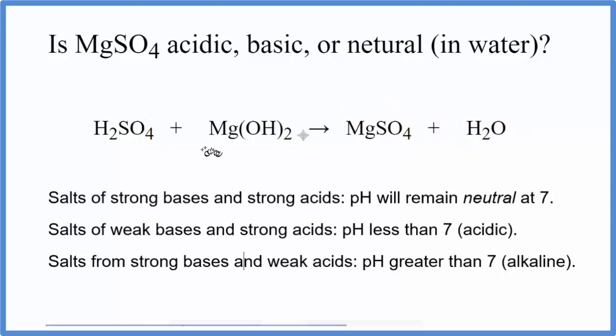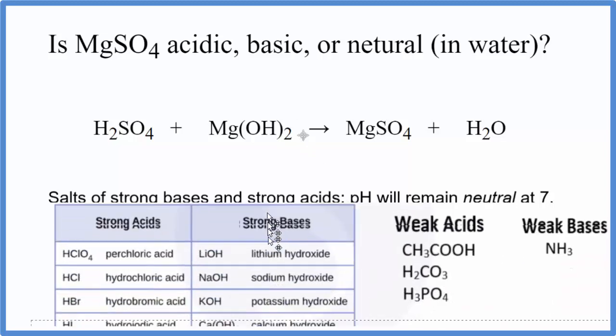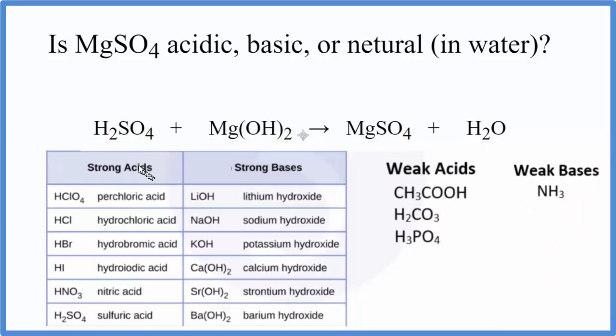So we know the reaction. Now we need to figure the strength of the acid and the base out. We can use this table down here to help us. So looking at our table, we're looking down our strong acids, and here's sulfuric acid, H2SO4. SA, we'll write that up there.